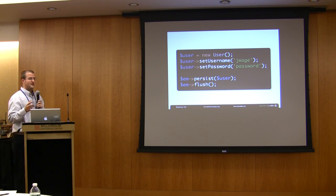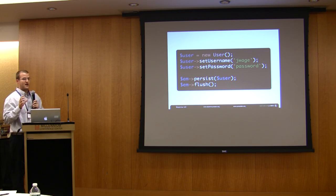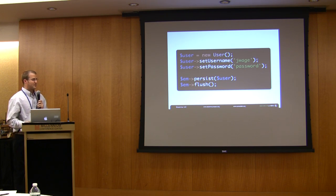So here's that same example with a Doctrine 2 entity with the set username and the set password. And these are physical methods. Instead of using a magic __call that's defined in that magic Doctrine_Record, they're just regular methods with regular properties. And then Doctrine is able to persist these objects transparently.